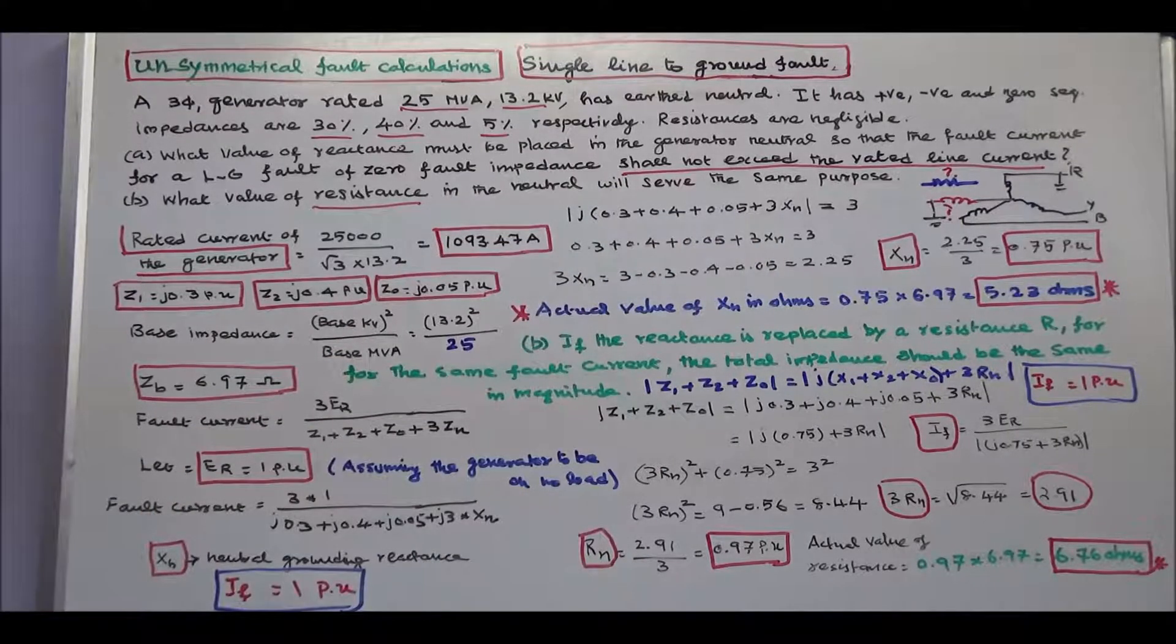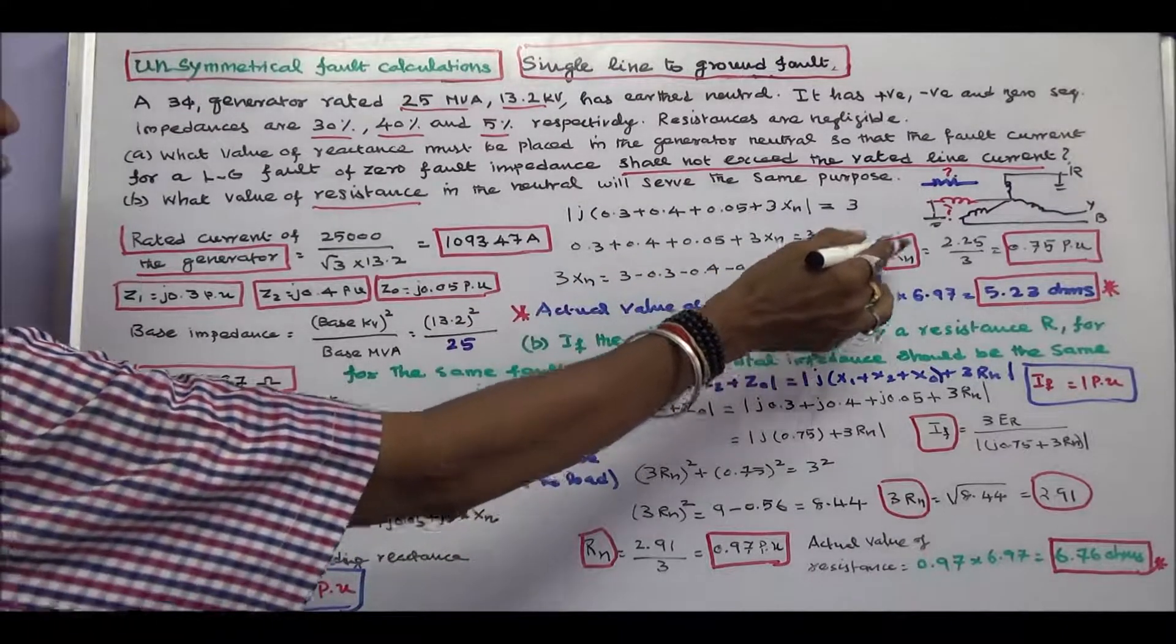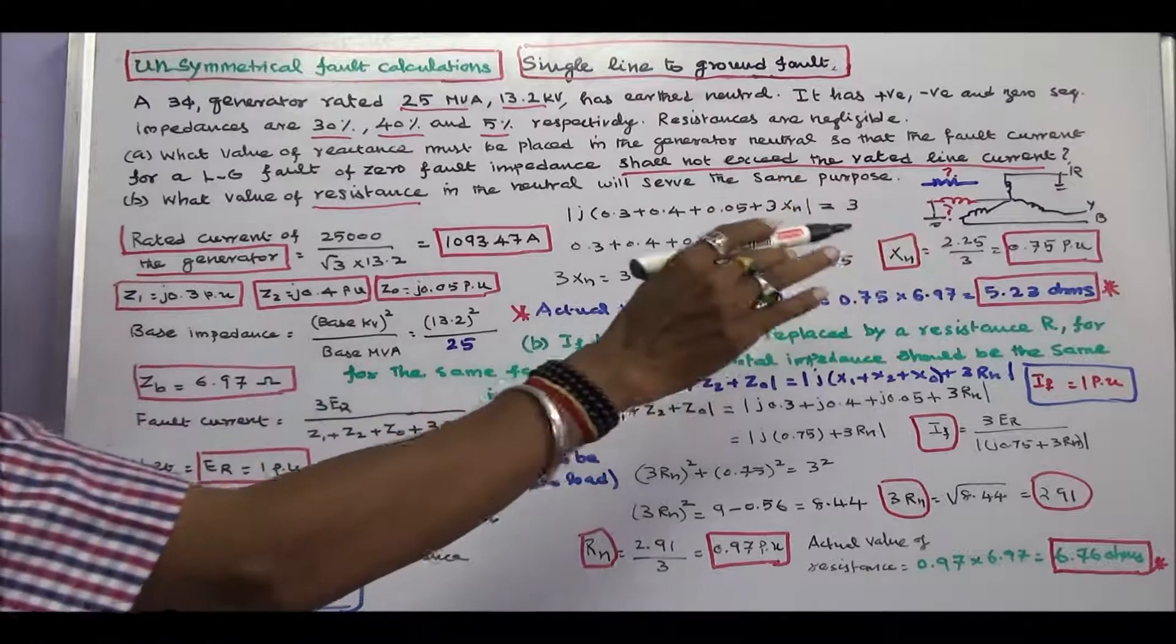Simplify the equation. 3Xn is equal to 2.25. Xn is equal to 2.25 by 3, that is equal to 0.75 per unit.